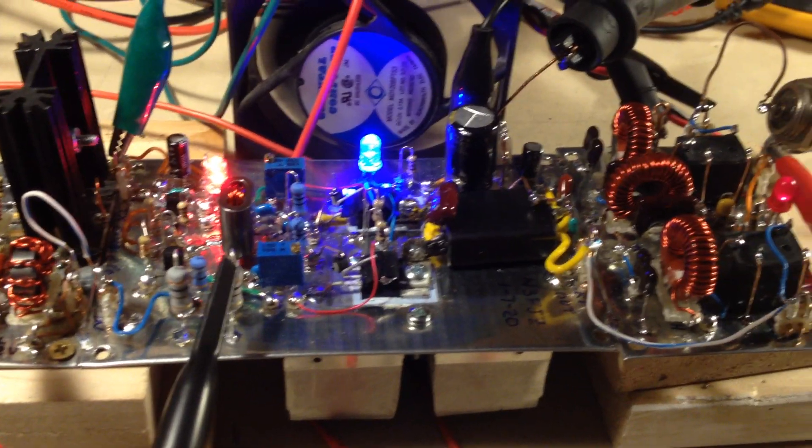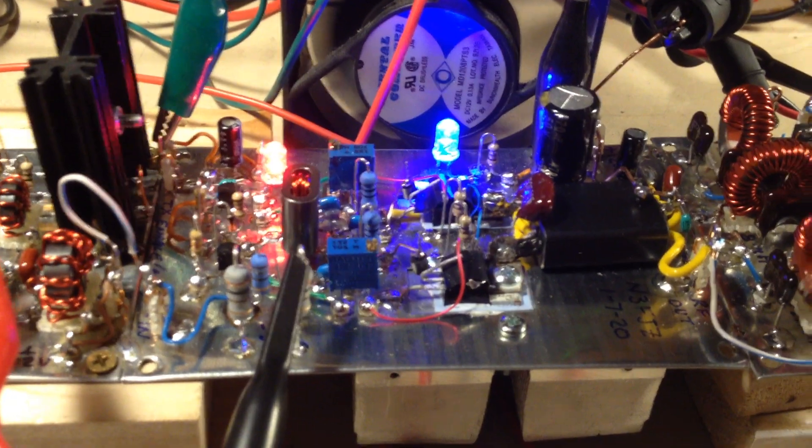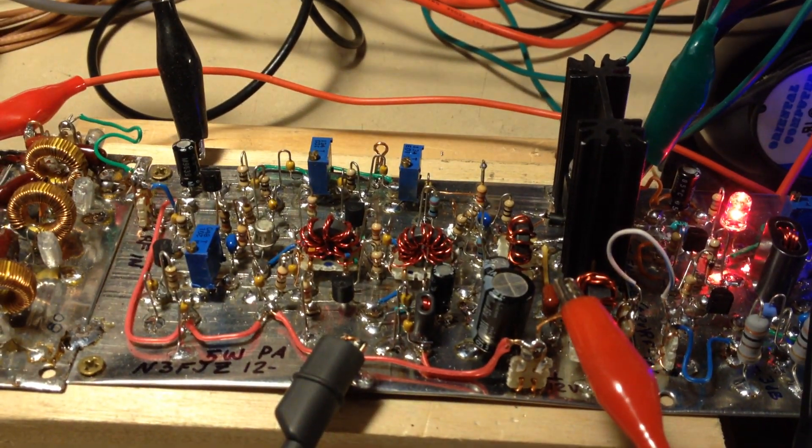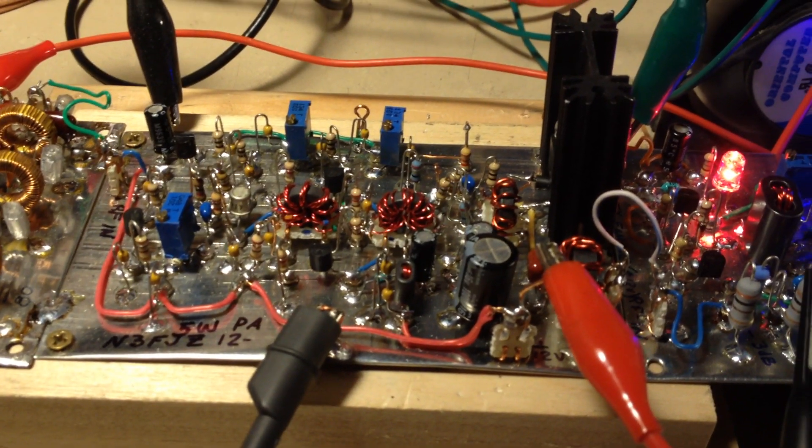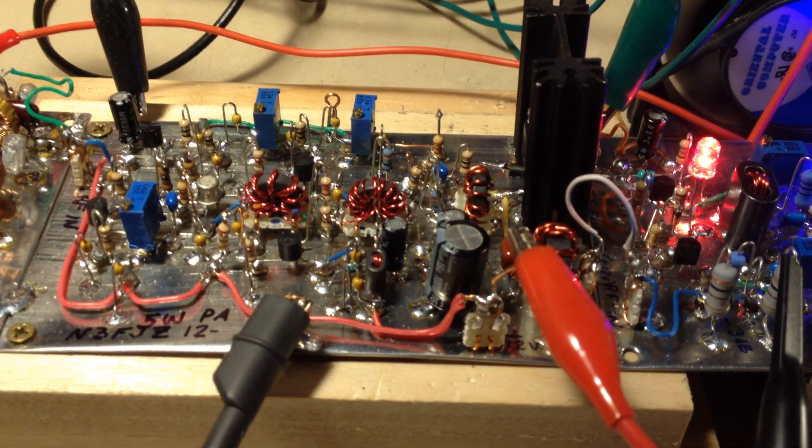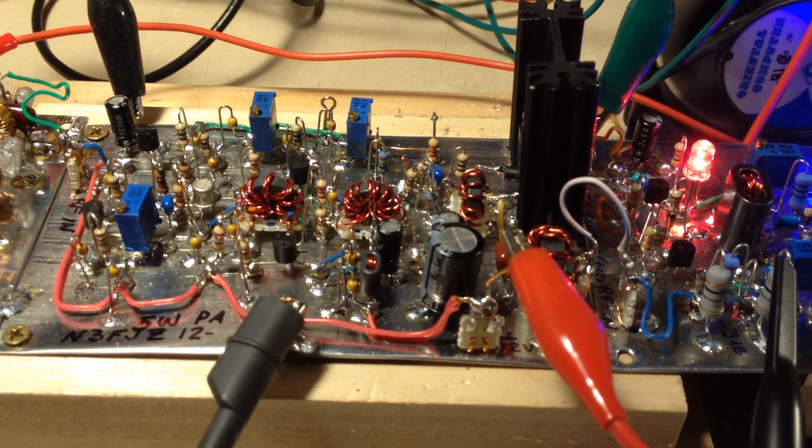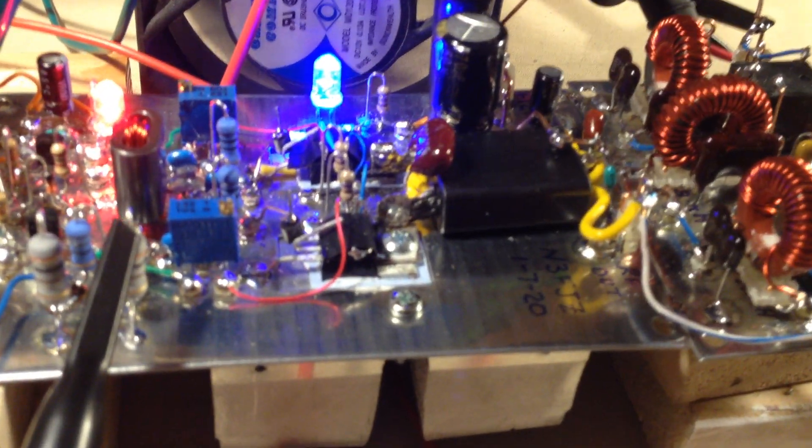So this is the module, and I'm driving it with a 5-watt PA that I built earlier, which I'm actually throttling back, I believe, to a watt or less. And then I have a 3 dB pad on the 6JL amp.